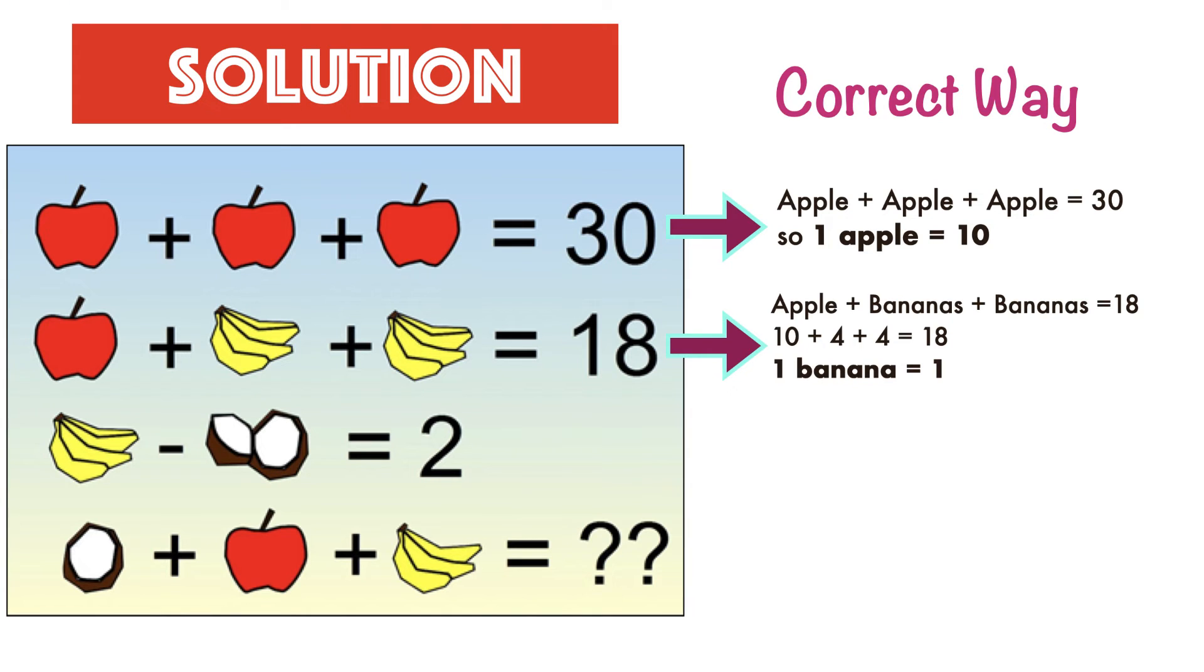In the third equation, bananas minus coconuts equals 2, so the value of the coconut is 2, making it 4 minus 2 equals 2. Since there are 4 bananas, each individually equals 1. The same logic can be used for the two halves of the coconuts.